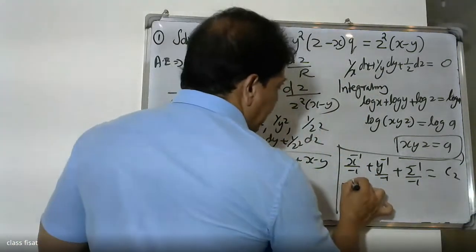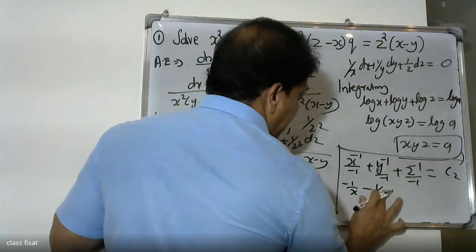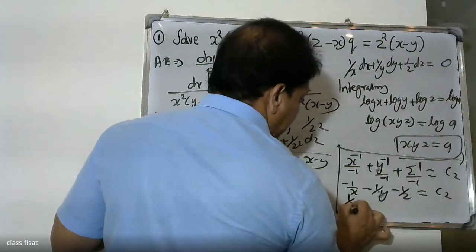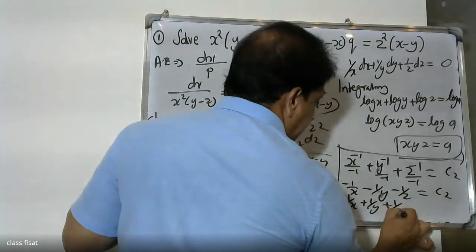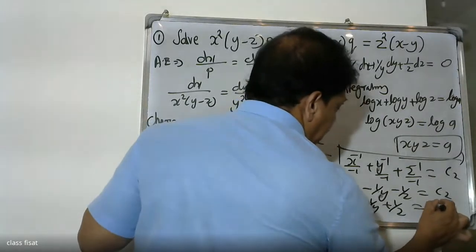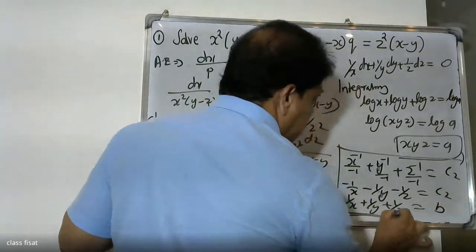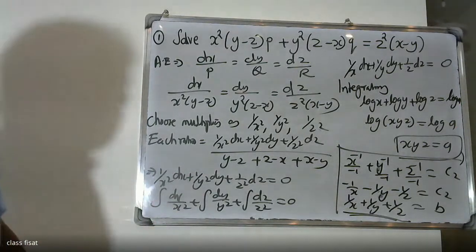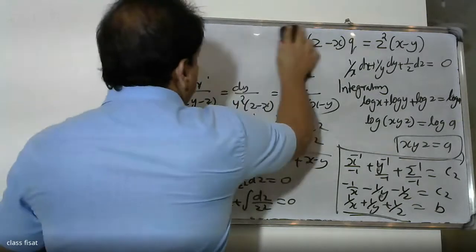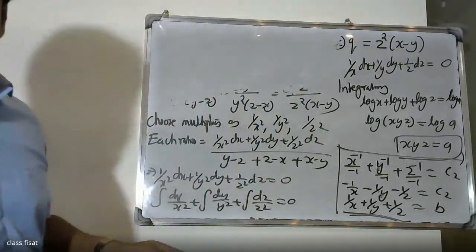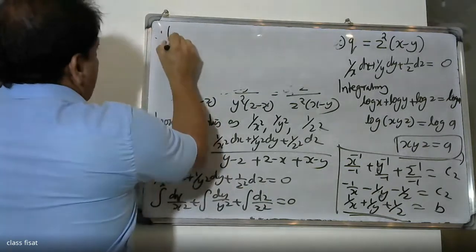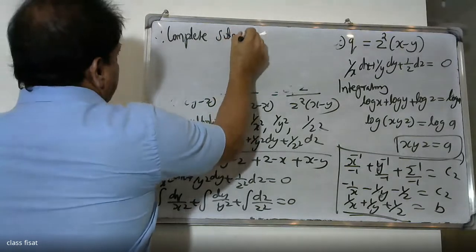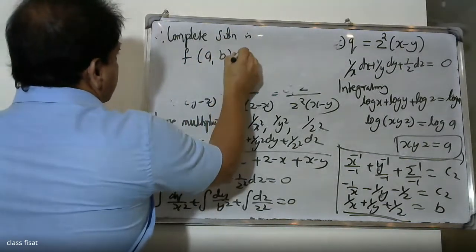That gives minus 1/x minus 1/y minus 1/z equals zero, which means 1/x plus 1/y plus 1/z equals b. Therefore the complete solution will be f(a, b) equals zero.